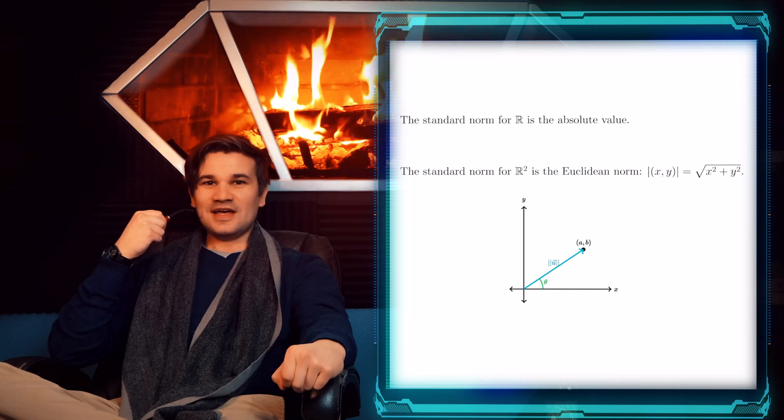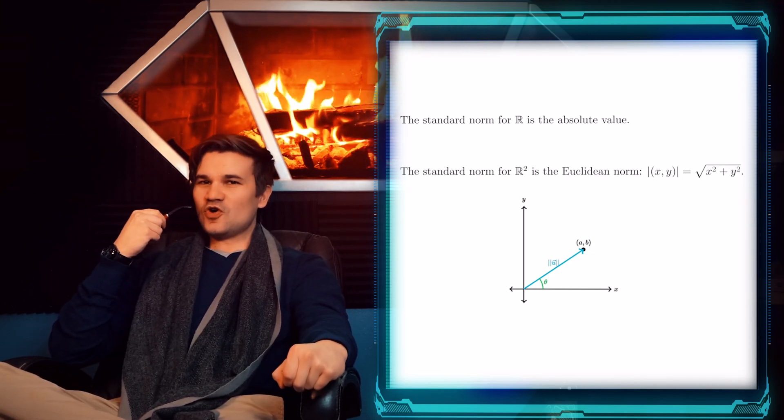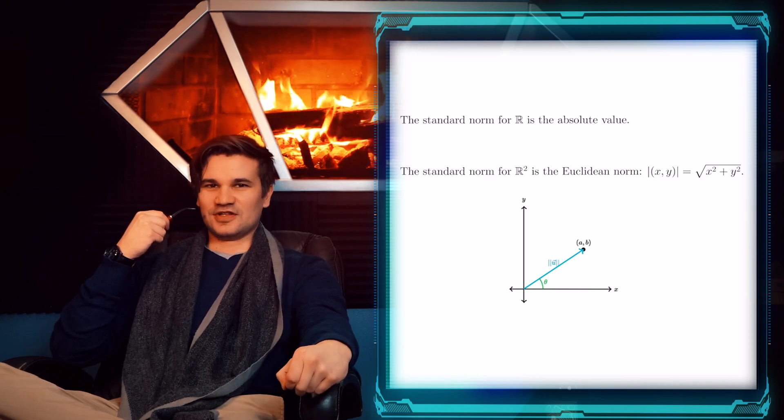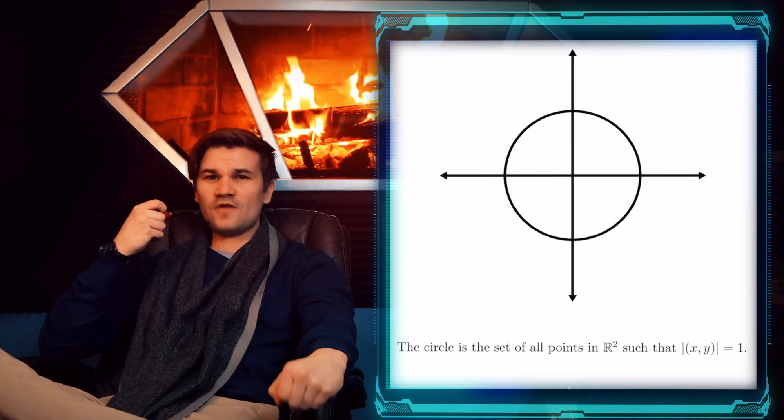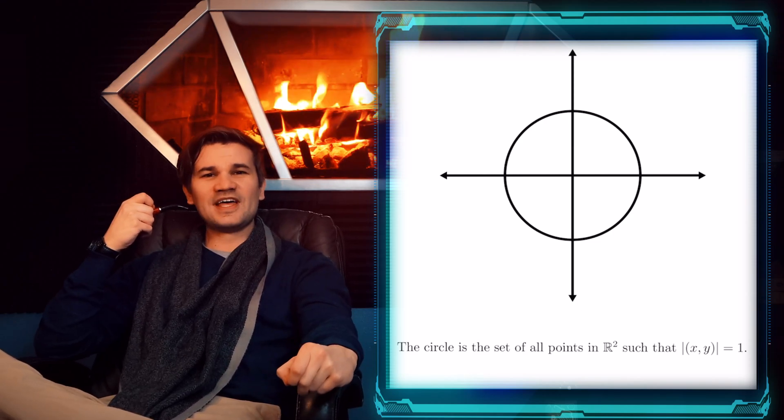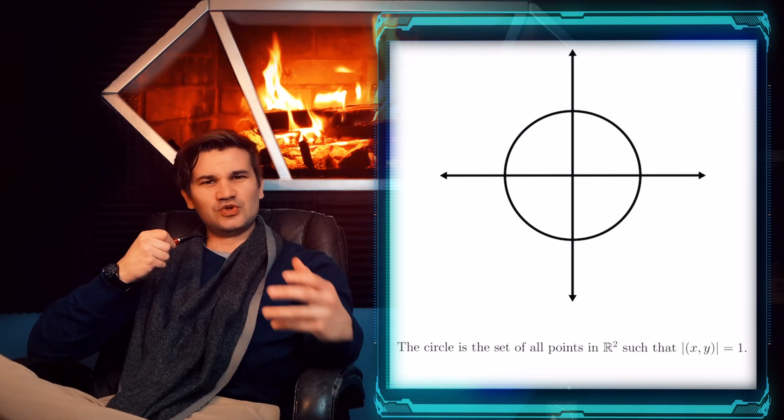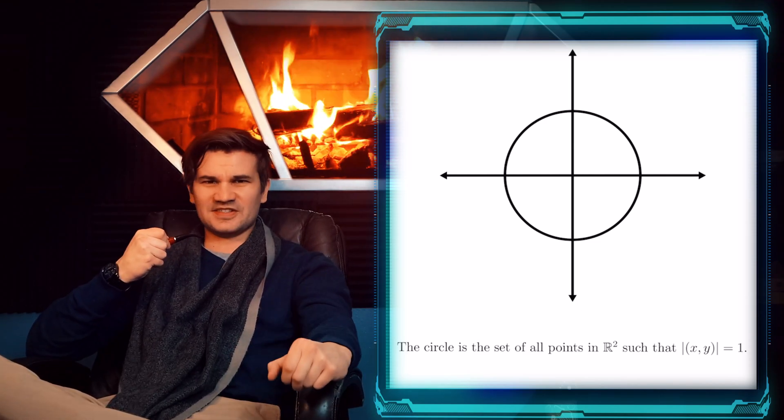In R2, it is the Euclidean norm, given by the Pythagorean theorem. The norm is essentially the magnitude of a vector in the plane. If we look at the set of all points that are distance 1 from the origin, the points in R2 with a norm of 1, we get a circle of radius 1. The set of all points with a given Euclidean norm value will always be a circle.